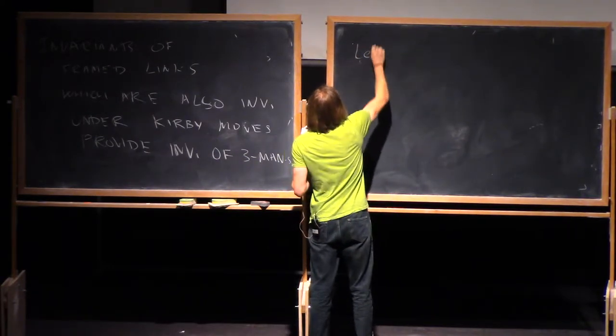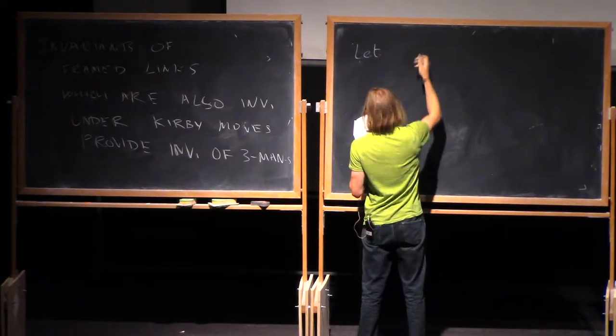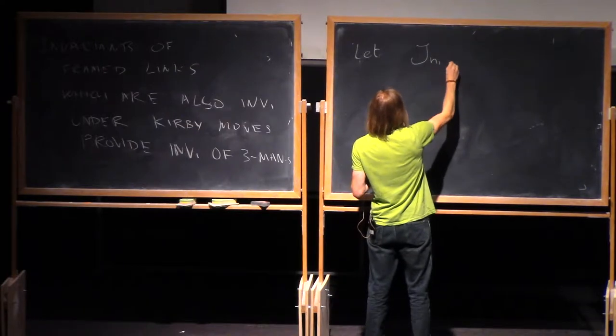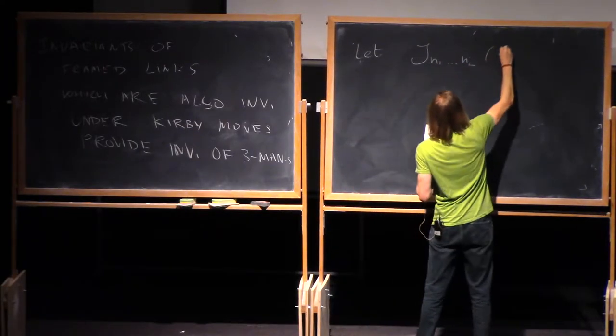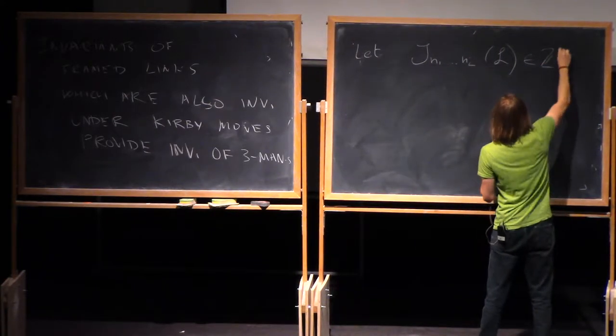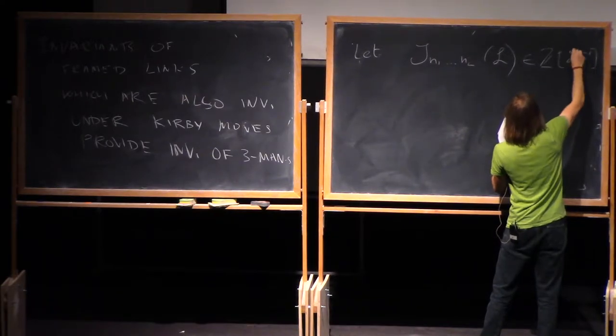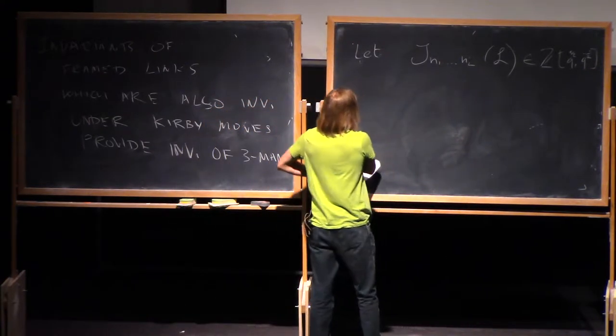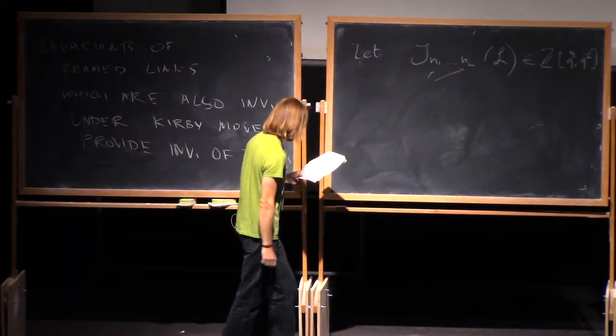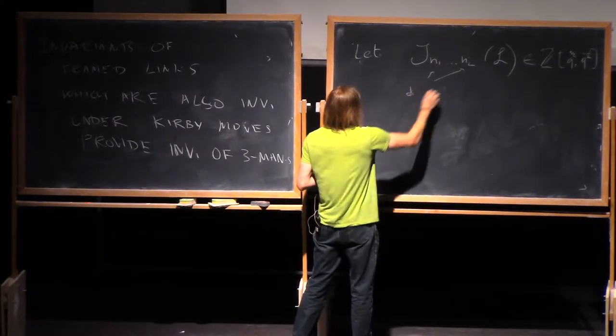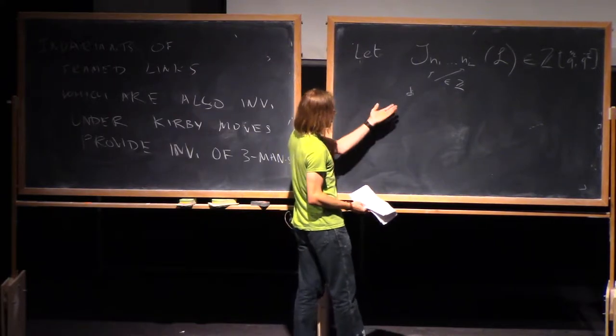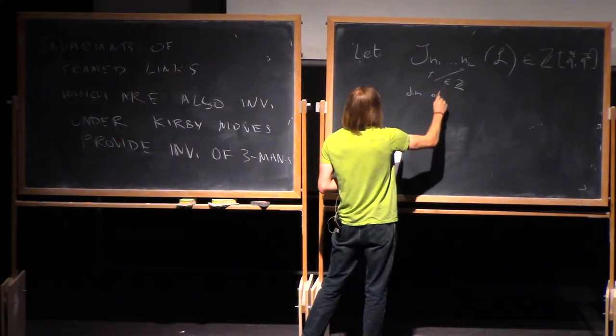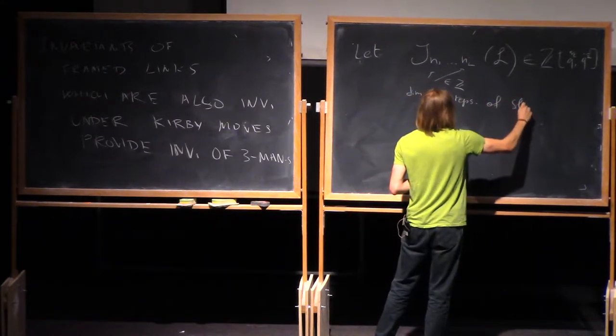So this is essentially the fact which is used in the construction of WRT invariant. So let me use the same notation for the link as before. I will denote the colored Jones polynomial associated to a link. So in my normalization, it will be a Laurent polynomial in Q one-half and Q minus one-half. So again, these labels mention the integers, so in principle, we want to color a link by representation of SL2.